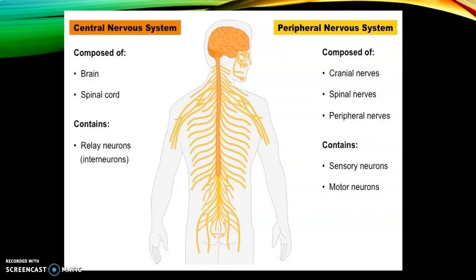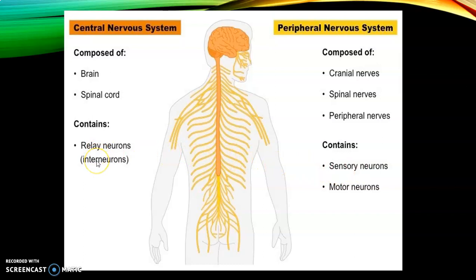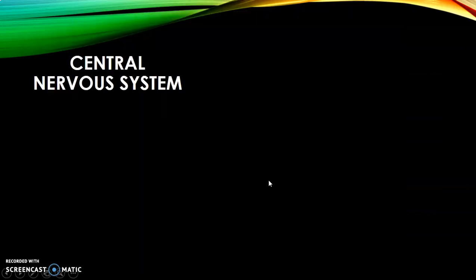The central nervous system is composed of the brain and spinal cord and contains relaying neurons. The peripheral nervous system is composed of your cranial nerves, spinal nerves, and peripheral nerves, which contain your sensory neurons and motor neurons. Sensory neurons absorb stimuli taken by our senses and send them to the CNS. The interneurons then connect these signals to the motor neurons, and the motor neurons produce the response according to the stimulus perceived.